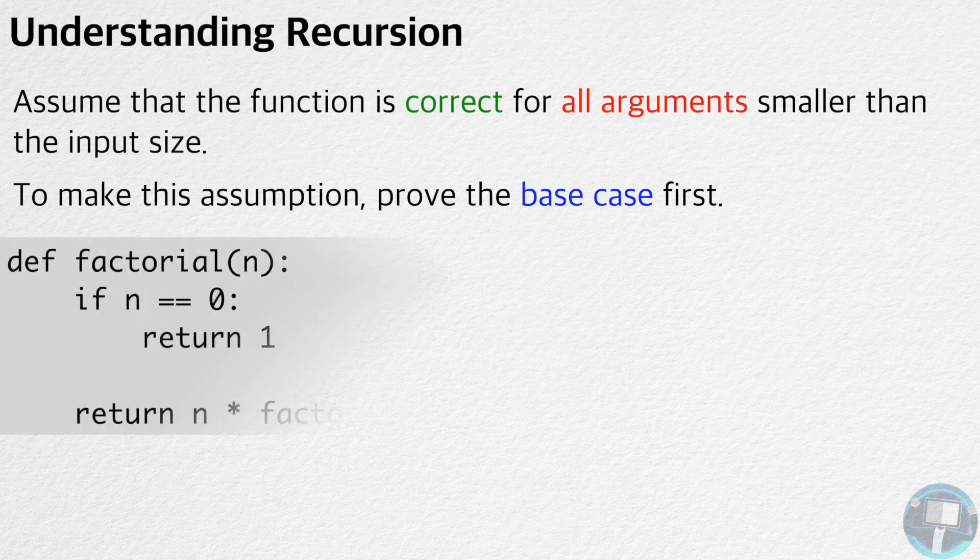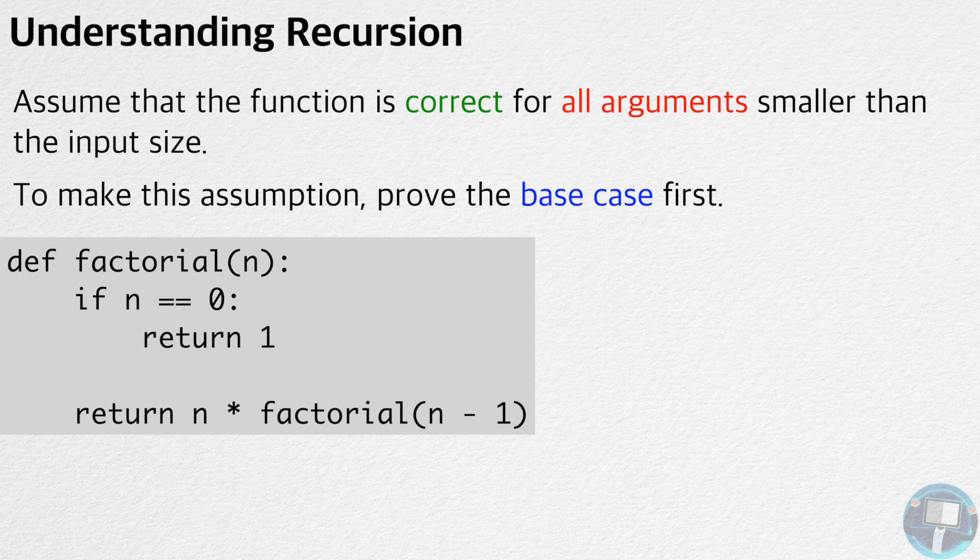Let's take a look at the factorial function again. We first need to prove the base case. The zero factorial is one, therefore the base case is correct.